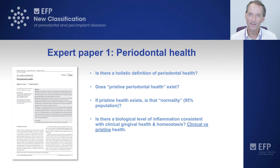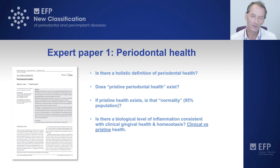We then asked: if pristine health doesn't exist and we're accepting a little bit of inflammation, how much inflammation is normal, or could be regarded as relatively clinically normal — at least consistent with clinical health versus pristine health?